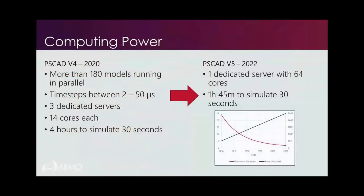The main disadvantage of electromagnetic transient models is that they are incredibly slow and computationally intensive. Before this year, we used PSCAD version 4, and our model consisted of 180 generator models running in parallel — as far as we're aware, the largest model in use anywhere in the world. All 180 generator models run with timesteps between 2 and 50 microseconds, which is incredibly detailed. The computational requirement was three separate massive computers with 14 cores each, and even then it would still take four hours to simulate just 30 seconds — very slow due to the enormous amount of detail in those models.